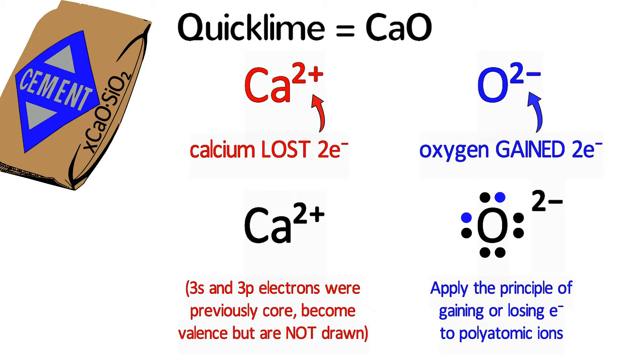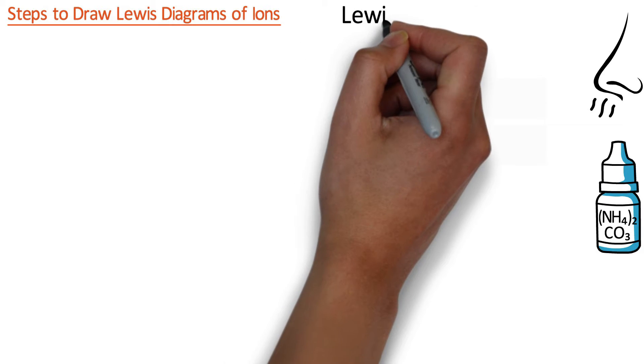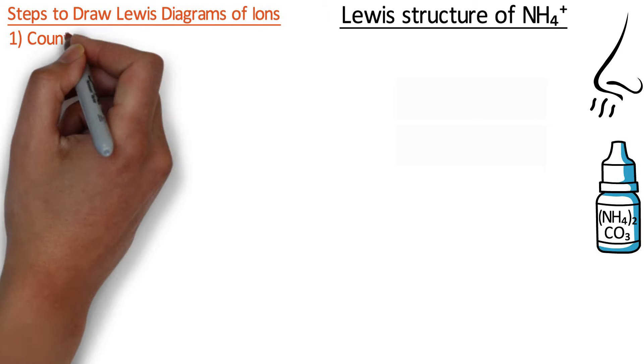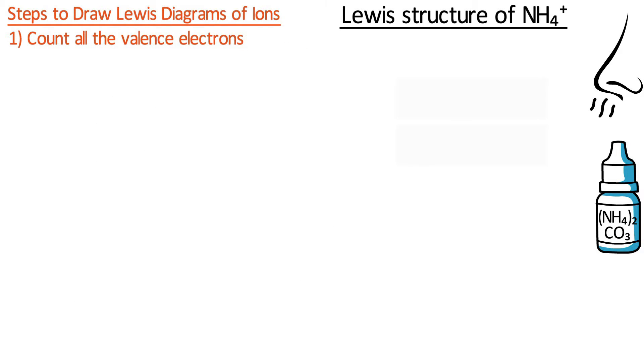Let's start by drawing the Lewis structure of ammonium carbonate, which is known as smelling salts and was traditionally used to help someone recover from fainting. Let's look at the two ions individually. Ammonium has the formula NH4+. First, count all the valence electrons in the formula.